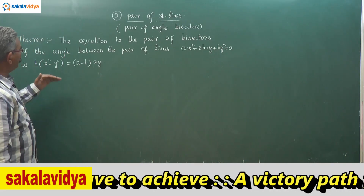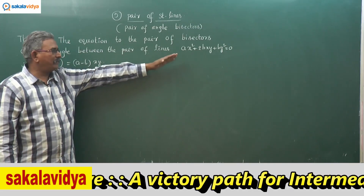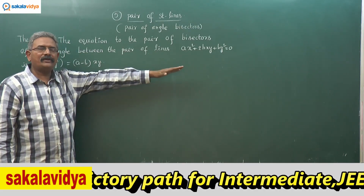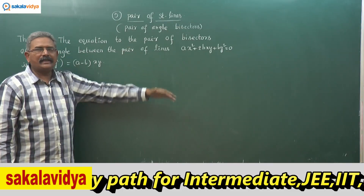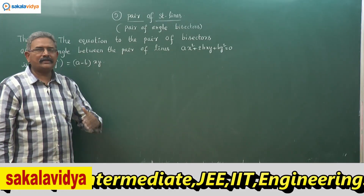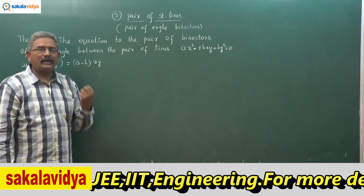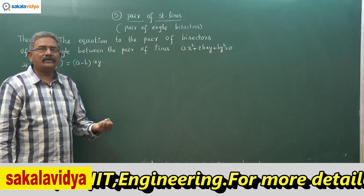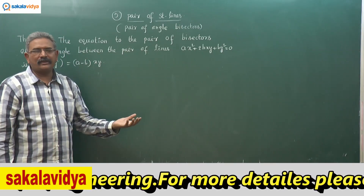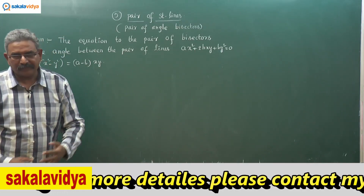First we need to find out the separate equations of ax² + 2hxy + by² = 0. Say those are L₁x + m₁y = 0 and L₂x + m₂y = 0. From this we can establish that L₁L₂ = a, L₁m₂ + L₂m₁ = 2h, and m₁m₂ = b.